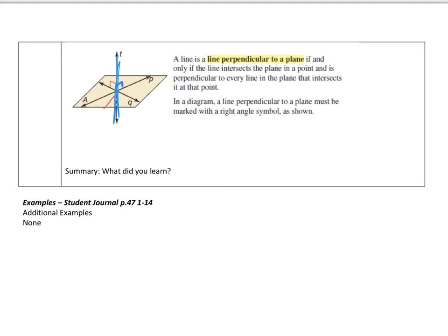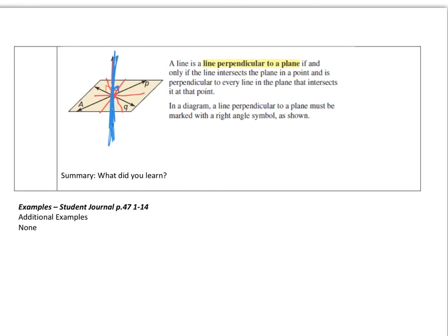then whatever line I draw in this plane that intersects where this perpendicular one is will be perpendicular as well. In other words, I could draw this and it will be perpendicular this way. Any line that's in this plane that intersects at this point will be perpendicular to the original line T. That's what this is saying. These were just a few of the different postulates we are going to cover.